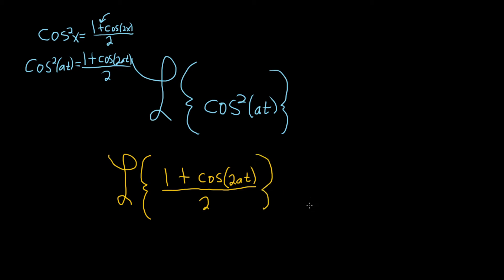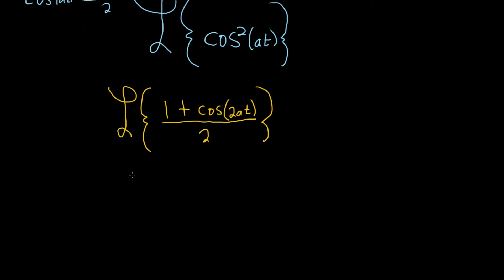Let's break this up. We can write this as the Laplace of 1 over 2 plus cosine of 2at over 2.